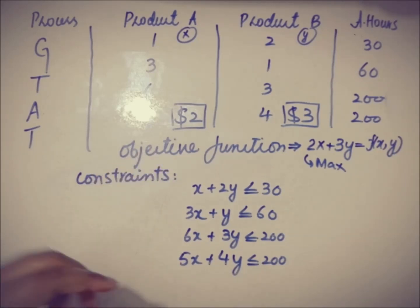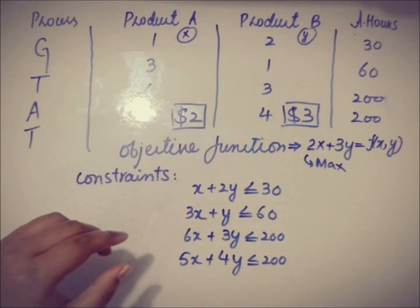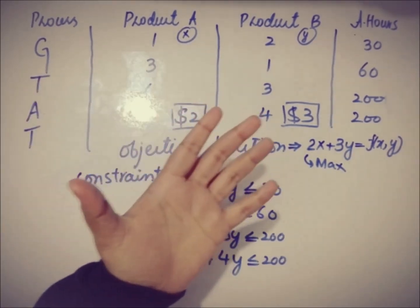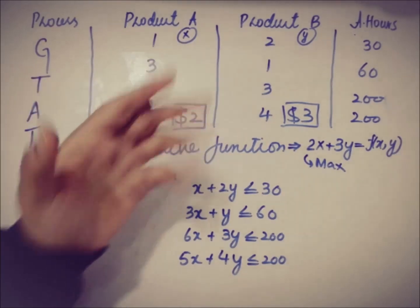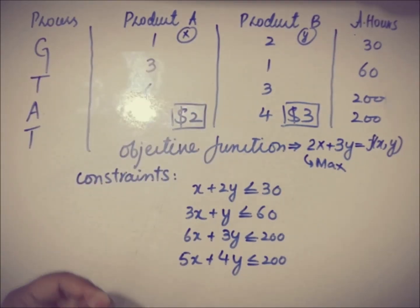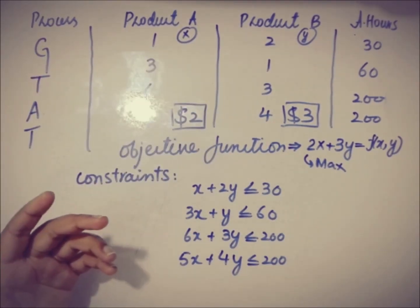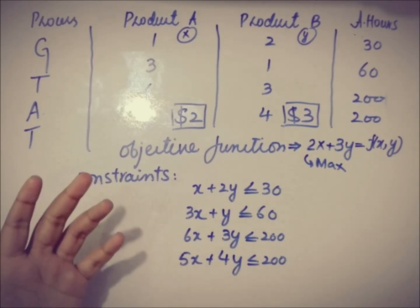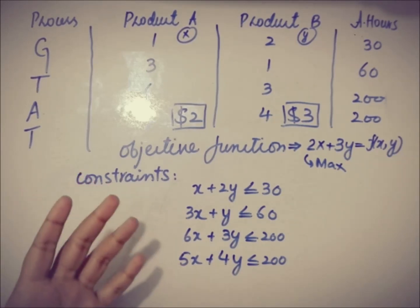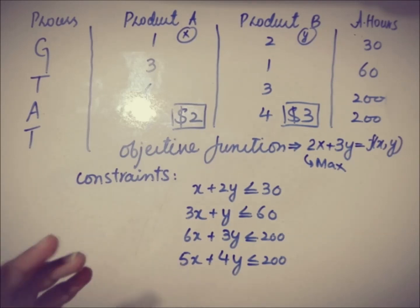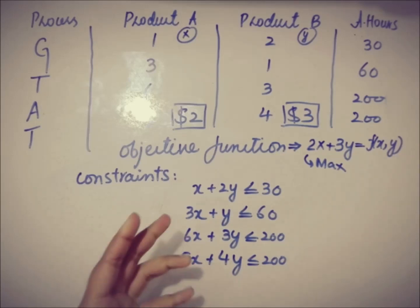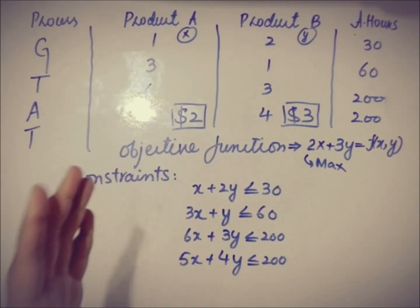You'll notice that I have used only two variables, x and y, corresponding to products A and B. This is the situation I was talking about in the last video — when the number of variables exceeds 2, the complexity increases and optimality decreases. So the important point is that the graphing method for linear programming is useful when there are no more than two primary variables.